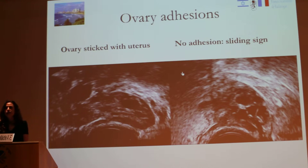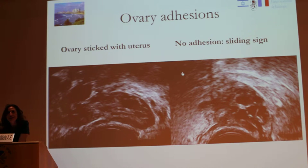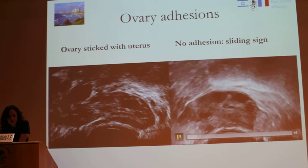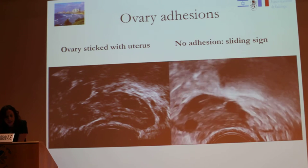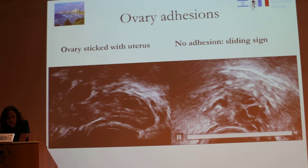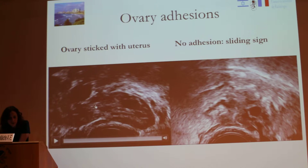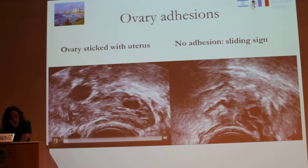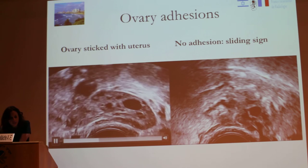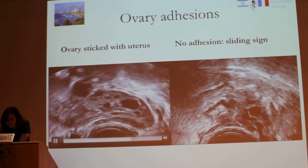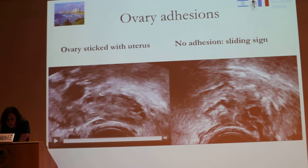Ovary adhesions are a very important element in infertility because they create dis-ovulation. Here you have a normal ovary. It is very important to apply compression — you can see that when you move the ovary there are no adhesions; everything is moving. When you have adhesions and you put the other hand and apply bimanual palpation, you have the ovary completely adherent to the uterus with no space between them.